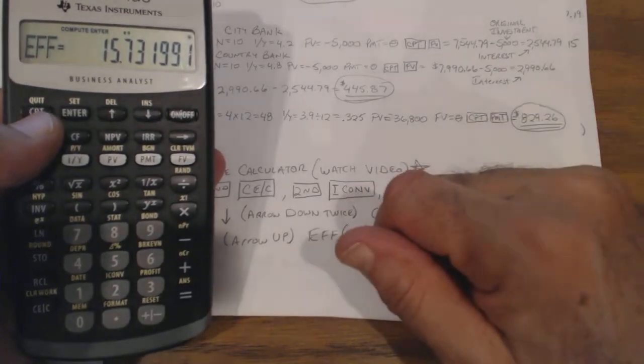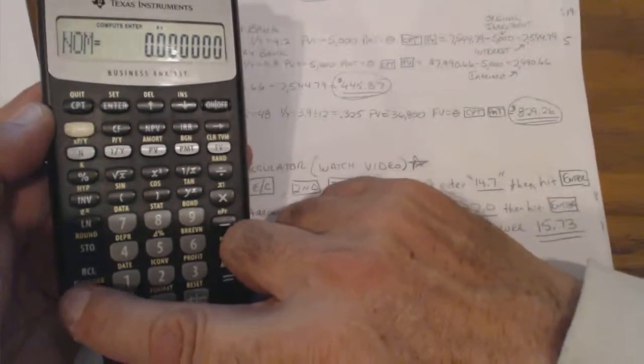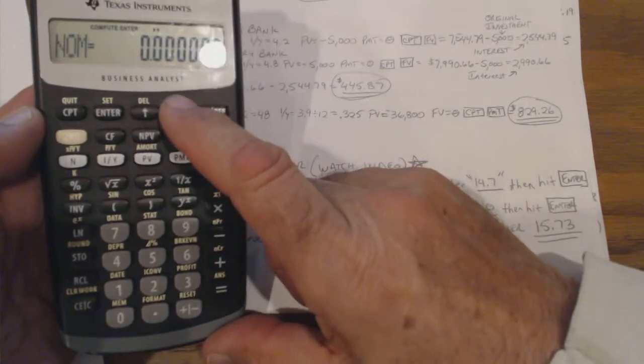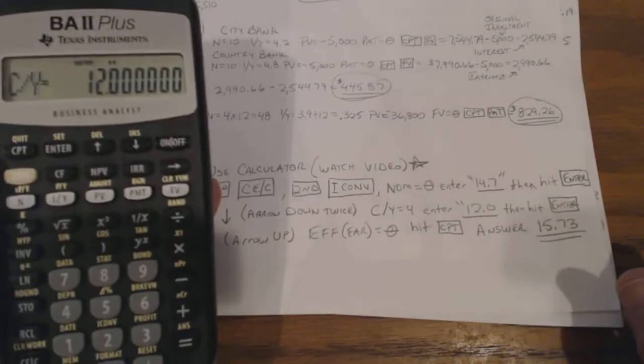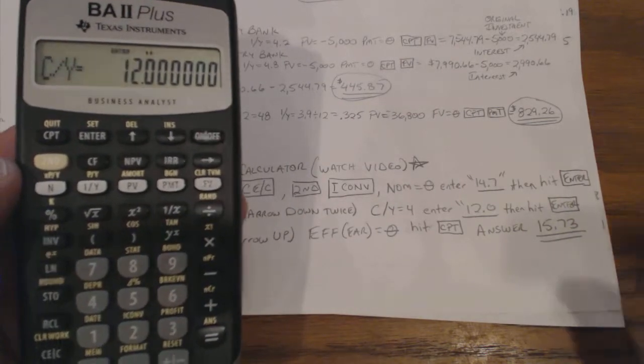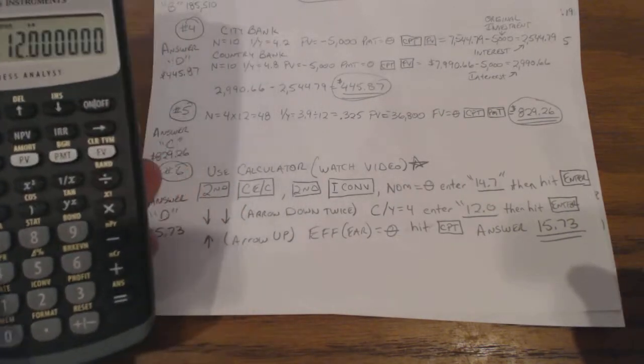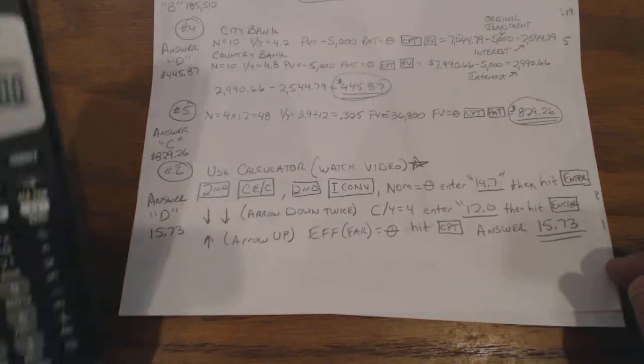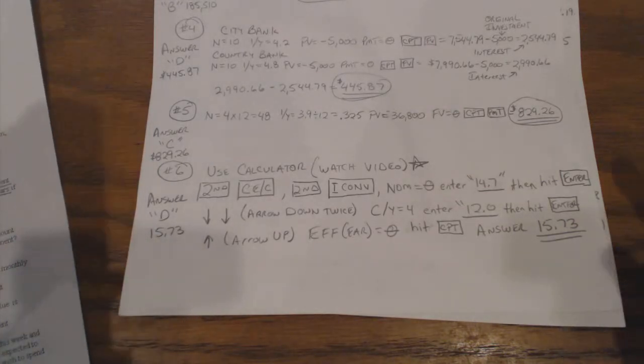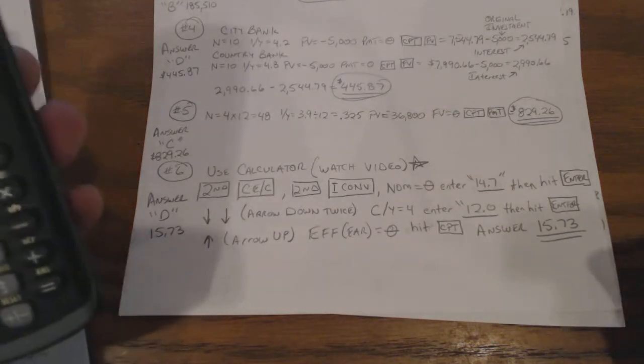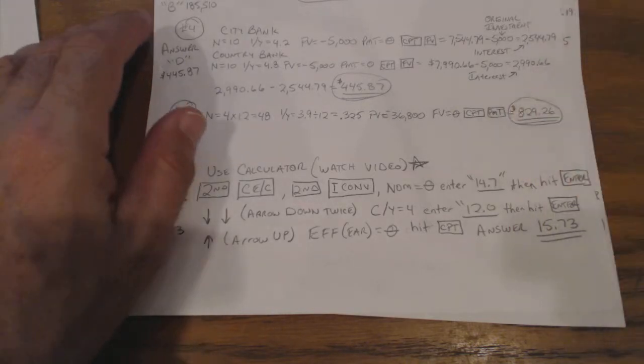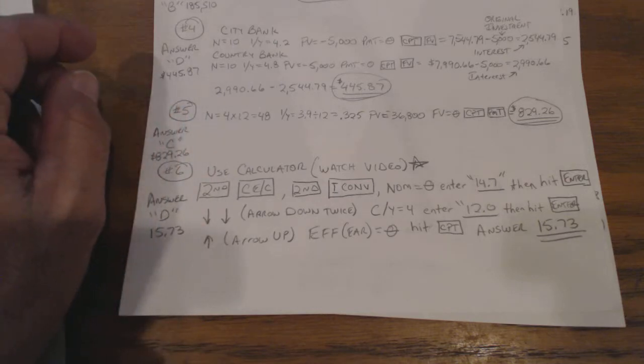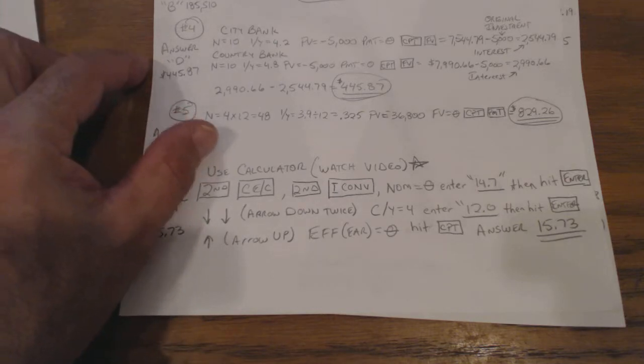You can hit Second clear and that clears all the stuff. But for some reason, I think it defaults to 12 for the periods per year. So you could probably change that, but no need to in this case. That's how you change something from an annual percentage rate to an effective annual rate. And that's the first six problems. I'll do the next ones on the next video.